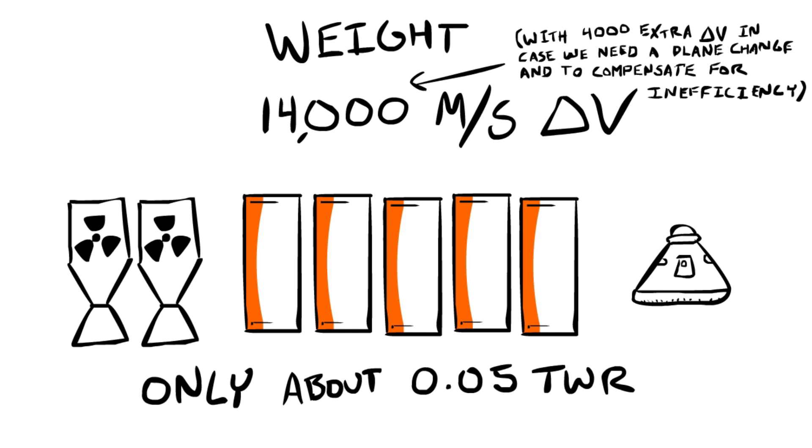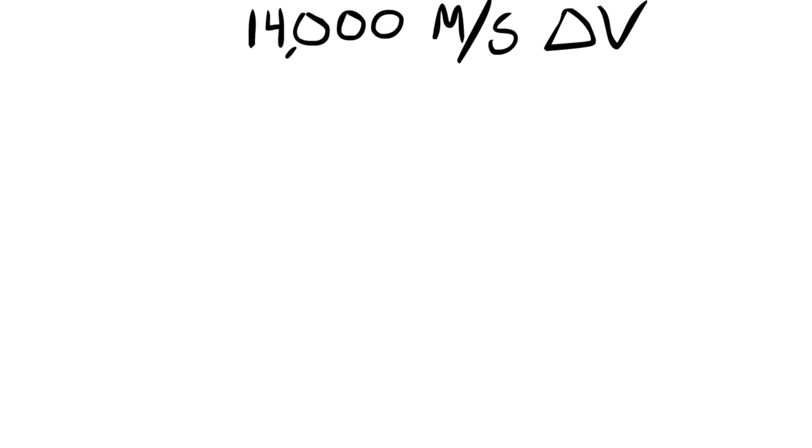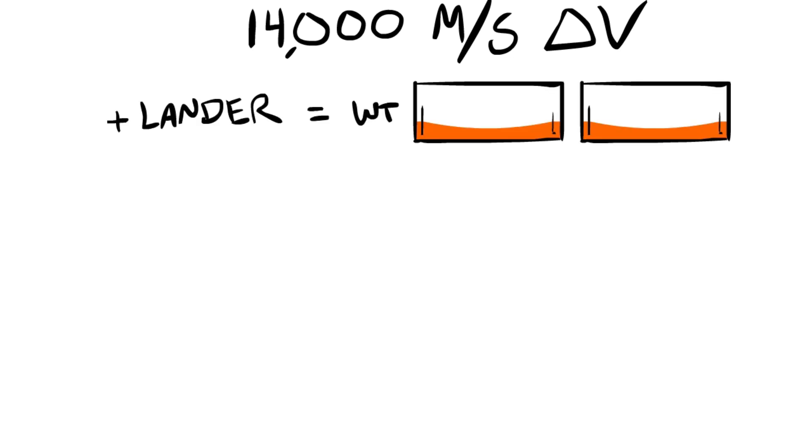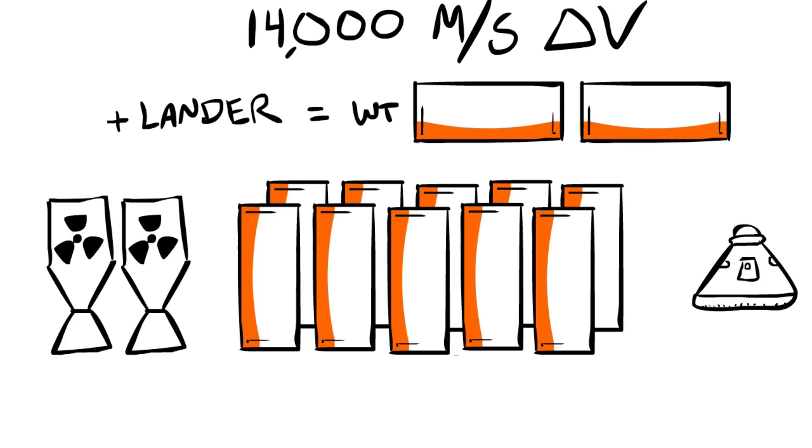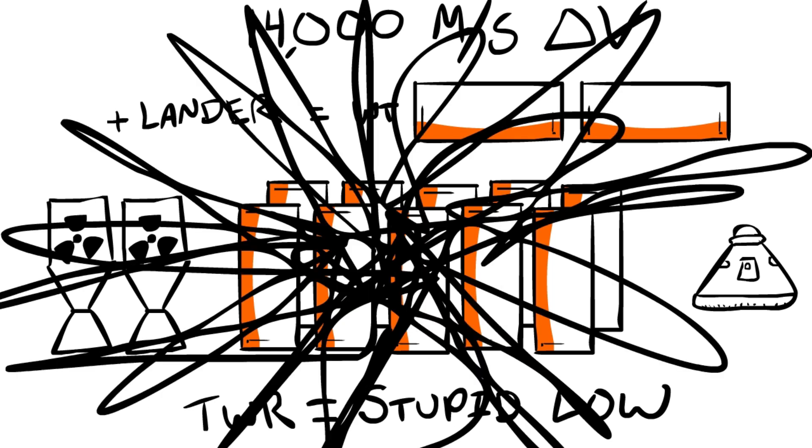In order to get the same delta-v out of a ship whose lander is roughly the weight of two fuel tanks, we need twice as many tanks in order to transfer it. That is only using the two nuclear engines. That makes our thrust-to-weight ratio stupidly low, and it would probably blow up on the launch pad. The solution is to build two ships.